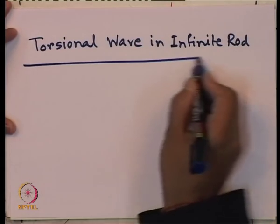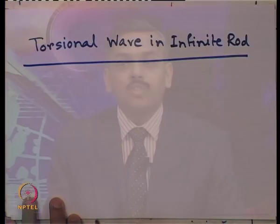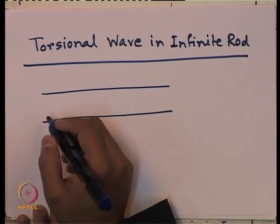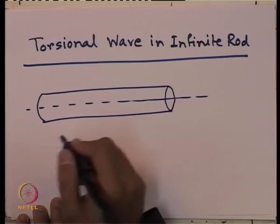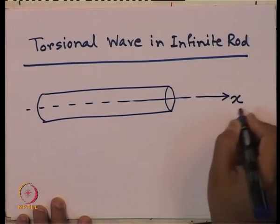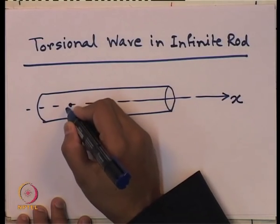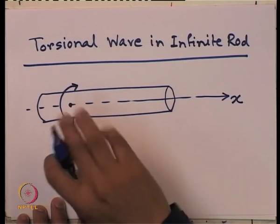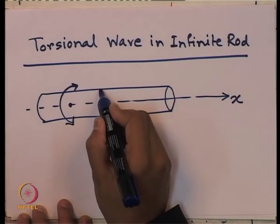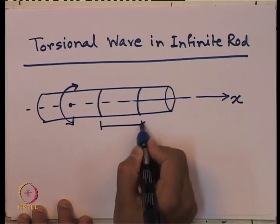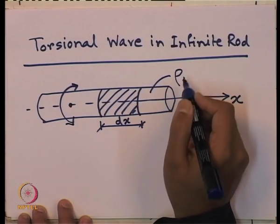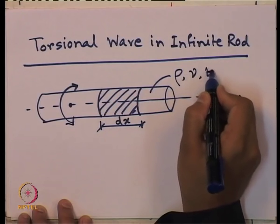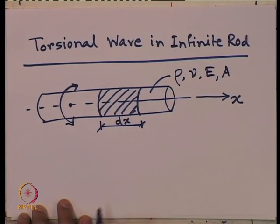We have already seen the derivation for the longitudinal wave. Now we are coming to the torsional wave. We take again the same infinite rod, where the wave is moving in the x direction but the particles are moving in the transverse direction — that is, it is getting twisted or experiencing torsion. We again take an infinitesimal small length dx of the material with given properties: density ρ, Poisson's ratio ν, Young's modulus E, and cross-sectional area A.